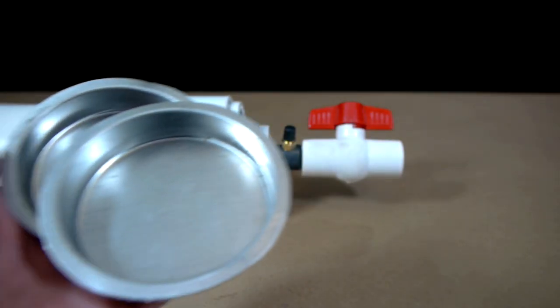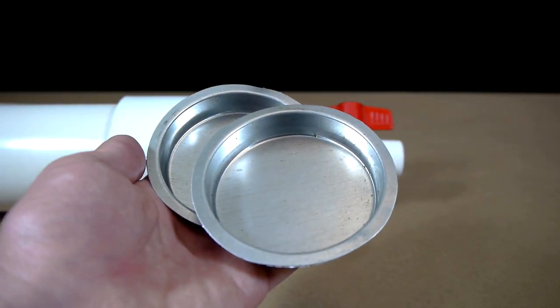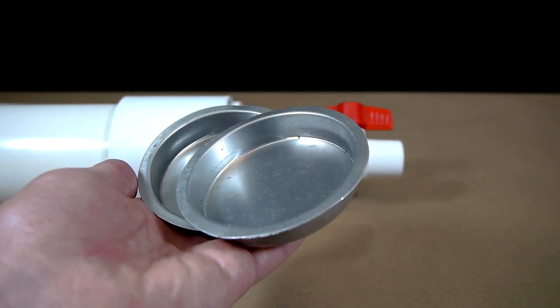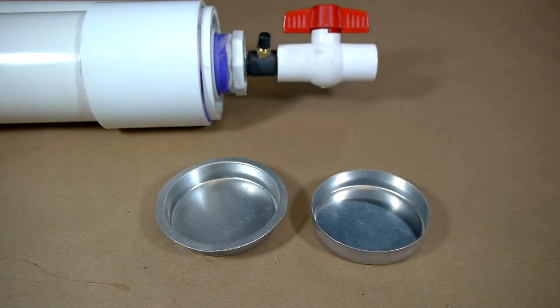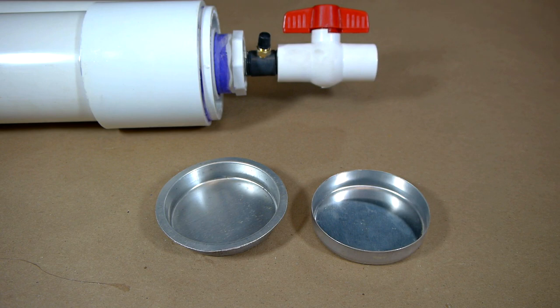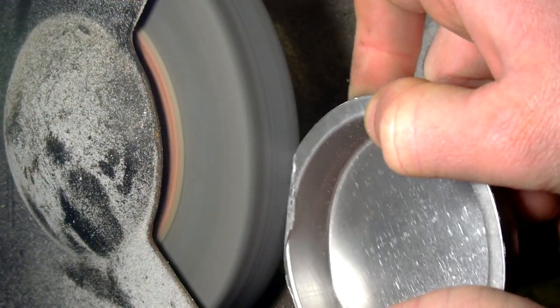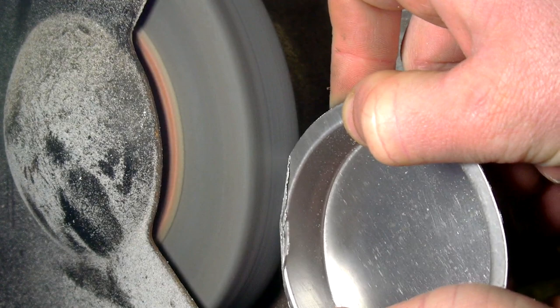The piston will be made out of two 3 inch diameter gas vent T-caps, which can be found in the home ventilation aisle of most hardware stores. These caps are made out of galvanized steel, and have a lip around the top rim that will need to be trimmed off so that they both look like the cap on the right. Grinding the lip off is easy work with a bench grinder, but if necessary, it could be done with a file.